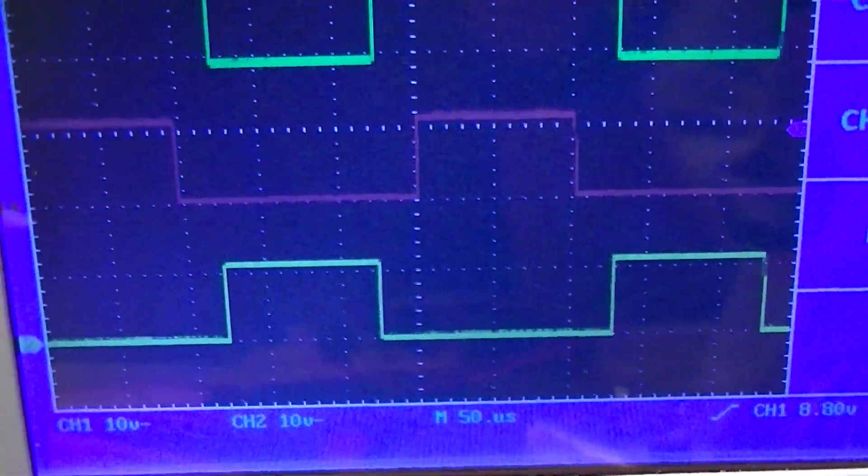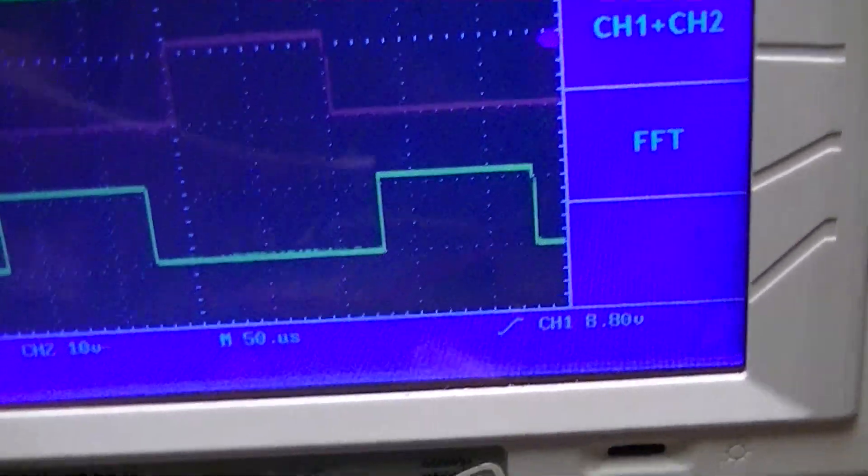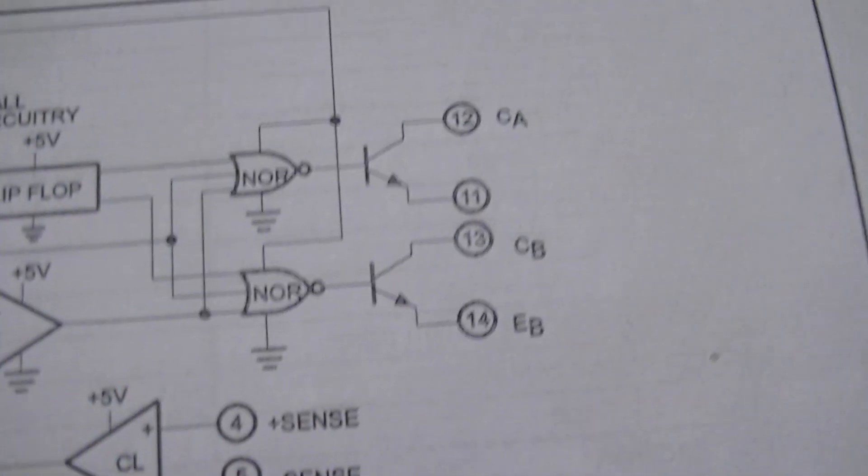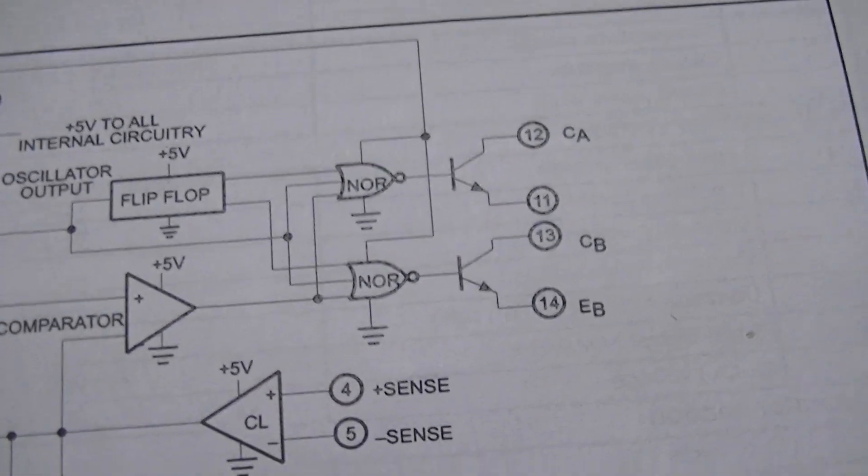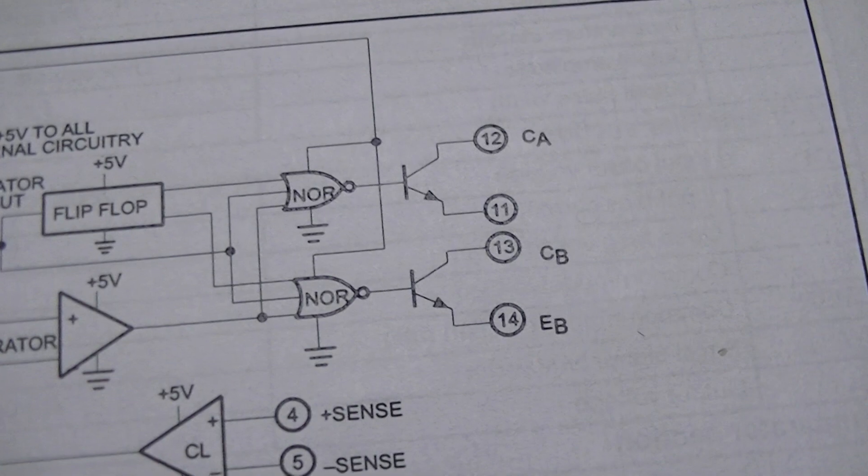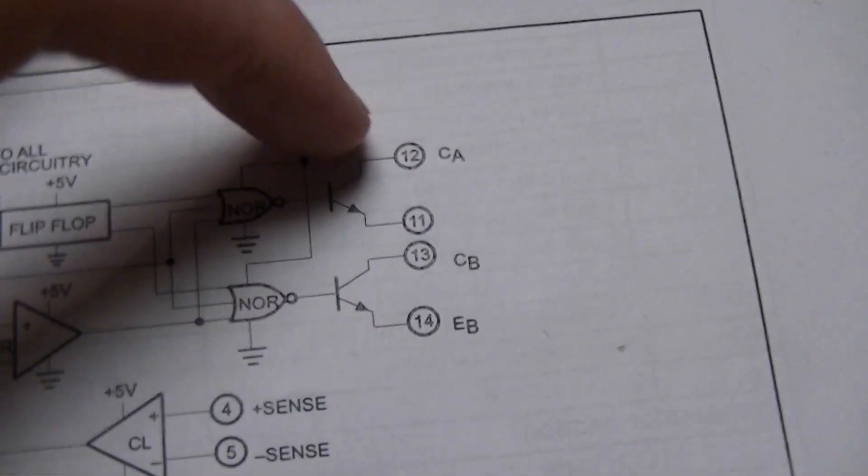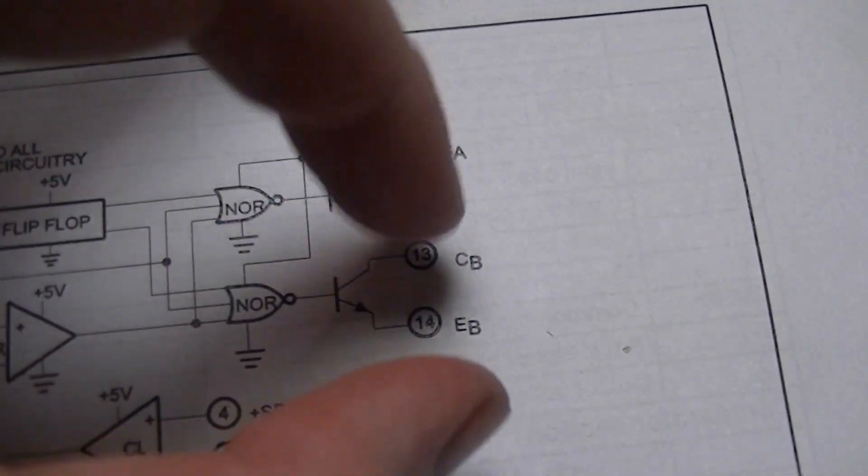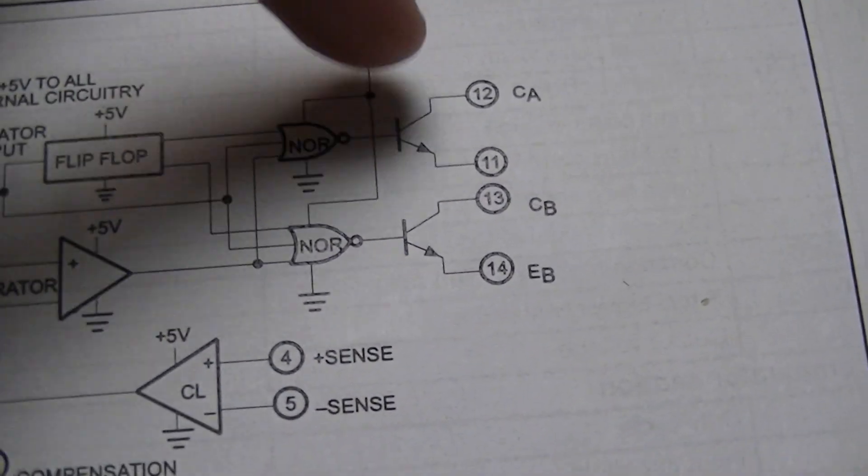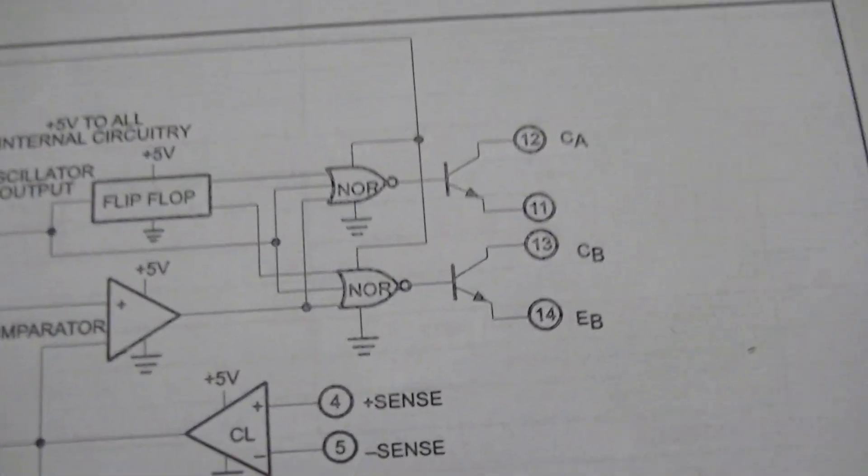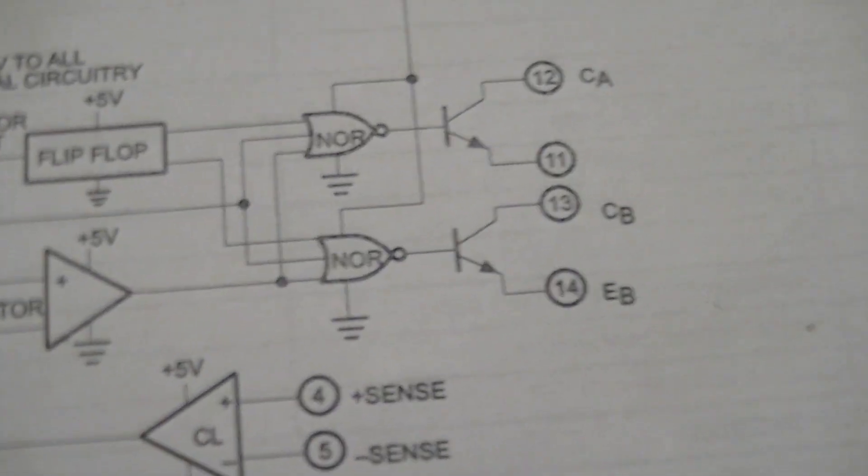This is the output of the SG3524. The SG3524 has a pair of BJTs at the outputs, and those can be configured in a number of different ways, like one hot the other neutral, or one tied to hot, for example push-pull type outputs, totem pole, various configurations.